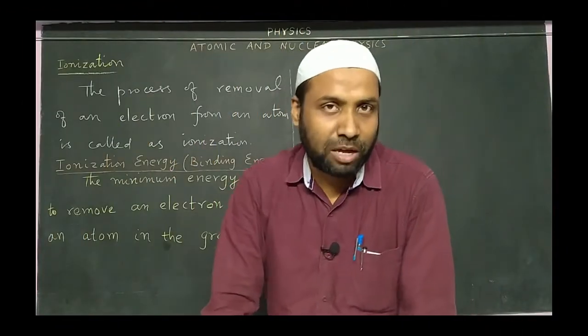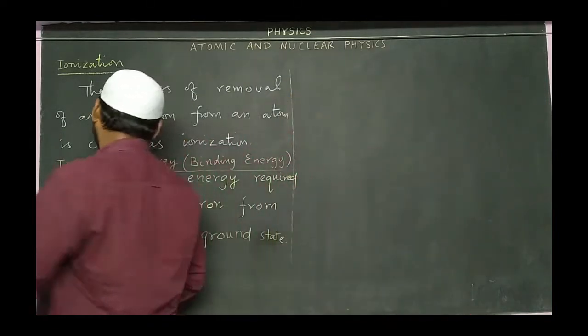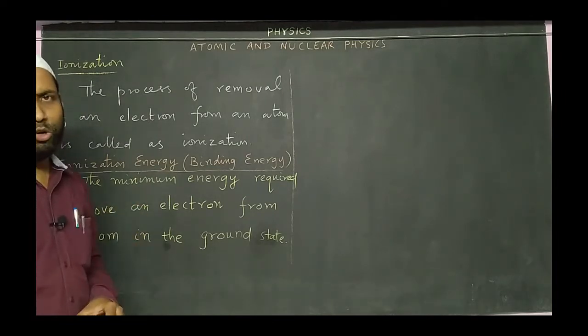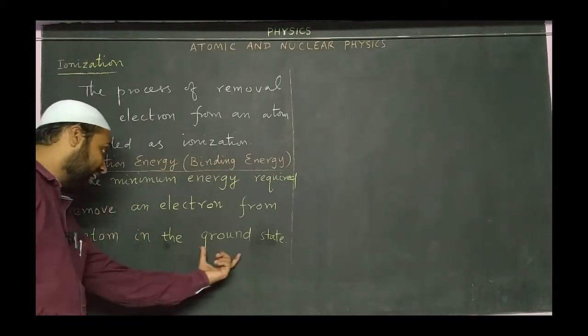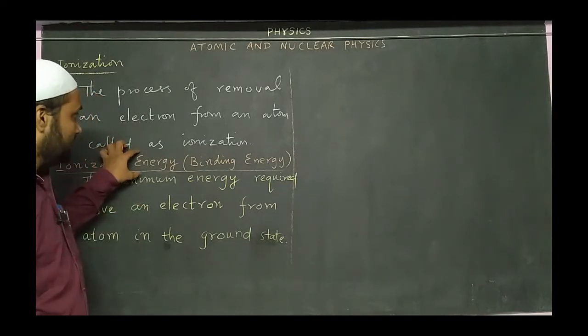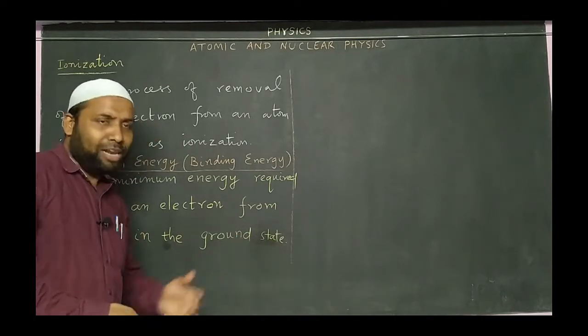Let me elaborate the concept of ionization. As I told you earlier, ionization is the process of removal of an electron from an atom. The minimum energy required to remove an electron from the ground state of an atom is referred as ionization energy or binding energy. What do you mean by ground state? I will explain that here.